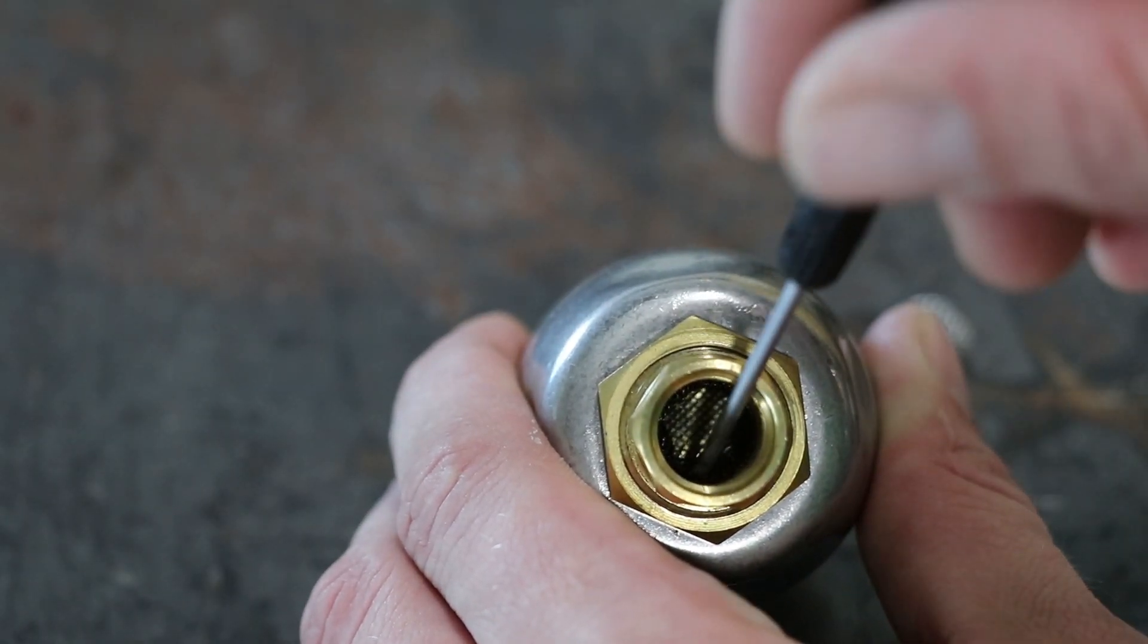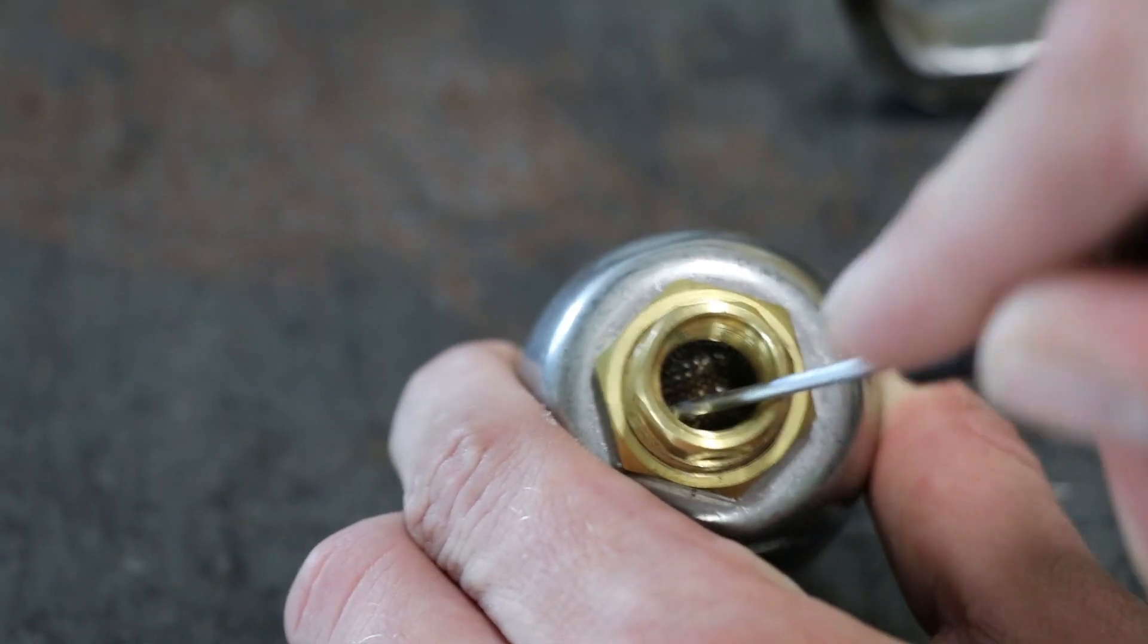All right, so the first step is we're going to take our small flat-headed screwdriver and just pry the screen away from the side of the inside of the nozzle.